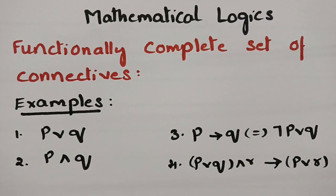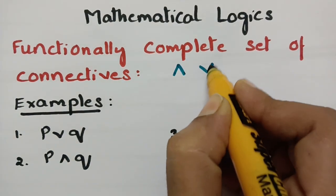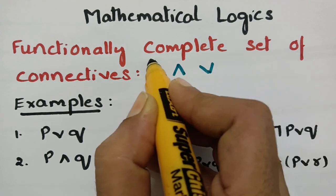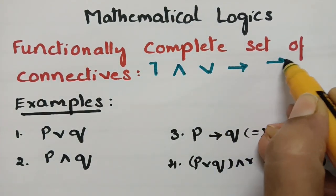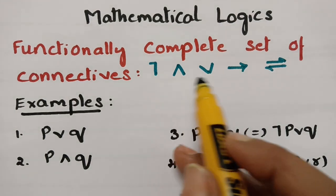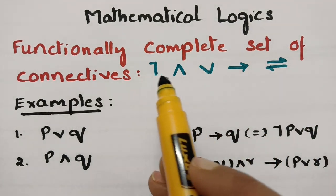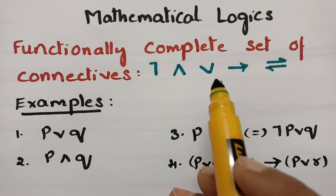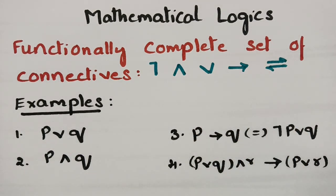So what are these connectives? The connectives are conjunction, disjunction, negation, implication, and double implication — also called biconditional. We have studied about the connectives between propositions: negation, conjunction, disjunction, implication, and biconditional.